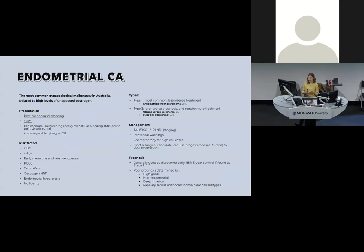Risk factors for endometrial cancer include high BMI (a high oestrogen state), increasing age, prolonged oestrogen exposure from early menarche or late menopause, PCOS, tamoxifen, oestrogen HRT, endometrial hyperplasia as a pre-cancer, and nulliparity. The most common type by far is endometrioid adenocarcinoma — about 90–95% of all endometrial cancers — with a better prognosis. Type 2 (serous carcinomas and clear cell) have a worse prognosis. Treatment is usually total hysterectomy with bilateral salpingo-oophorectomy and PLND for staging; many stage 1 patients are cured by surgery alone.